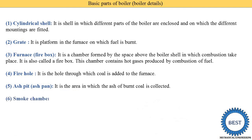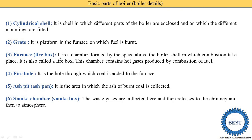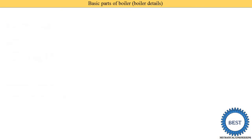The next component is the smoke chamber, also called the smoke box. Whatever hot gases are produced in the furnace are supplied through the fire tubes. At the outlet of the fire tubes, a box is provided known as the smoke chamber or smoke box. Waste gases are collected here and released to the chimney and then to the atmosphere. The smoke box is generally installed after the fire tubes.